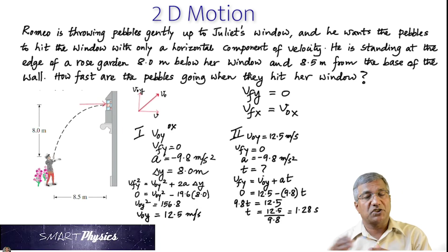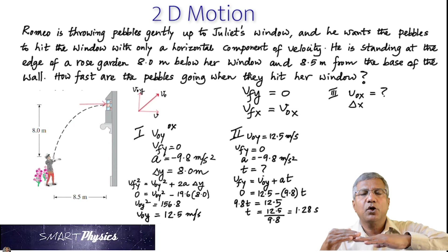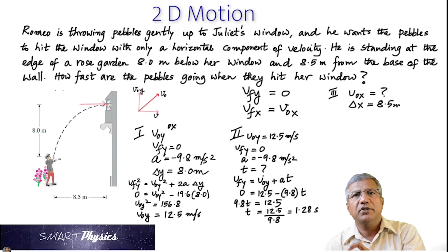Now that we have the time it takes, we can finally turn our attention to step three. In step three, we're going to use the time that we got. And remember that V0X is constant. Now, because the velocity along the X is constant, we can simply multiply that velocity with the time to get how much it moves along the X.